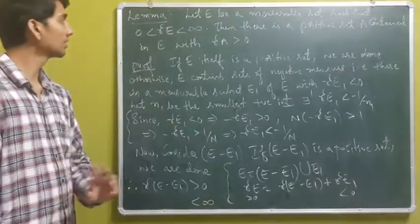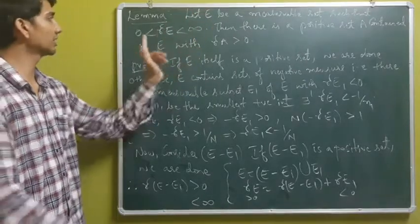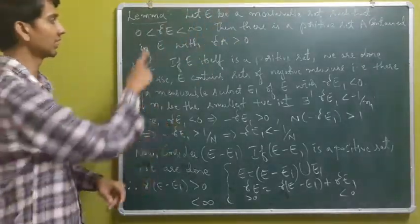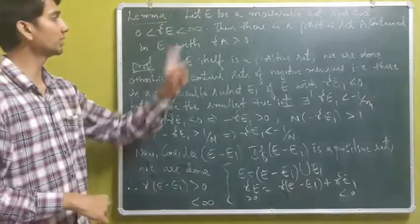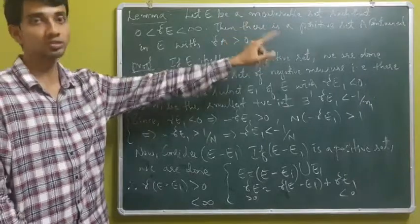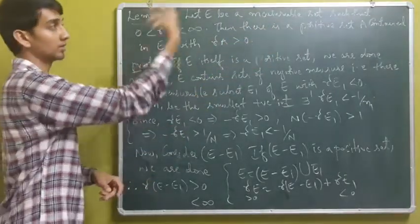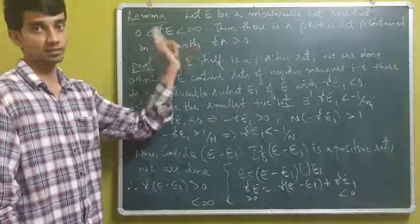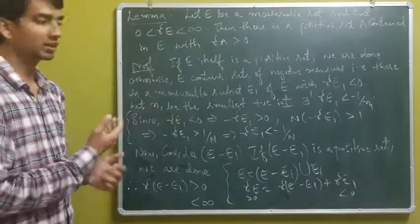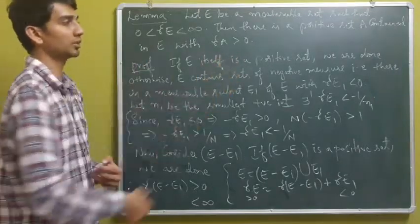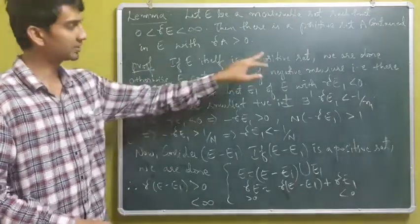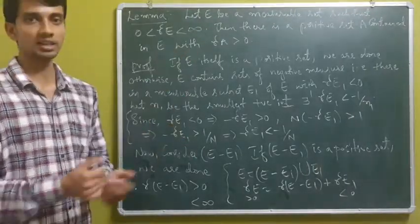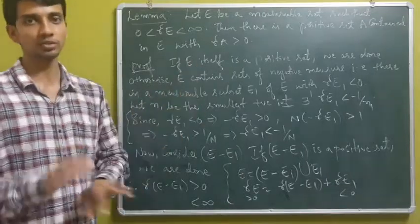For the next important lemma: let E be a measurable set such that the signed measure of E is positive and finite. Then we need to prove there is a positive set A contained in E with the signed measure of A positive. Looking into the proof, if E itself is a positive set we are done, because by the previous lemma every measurable subset of a positive set is positive.